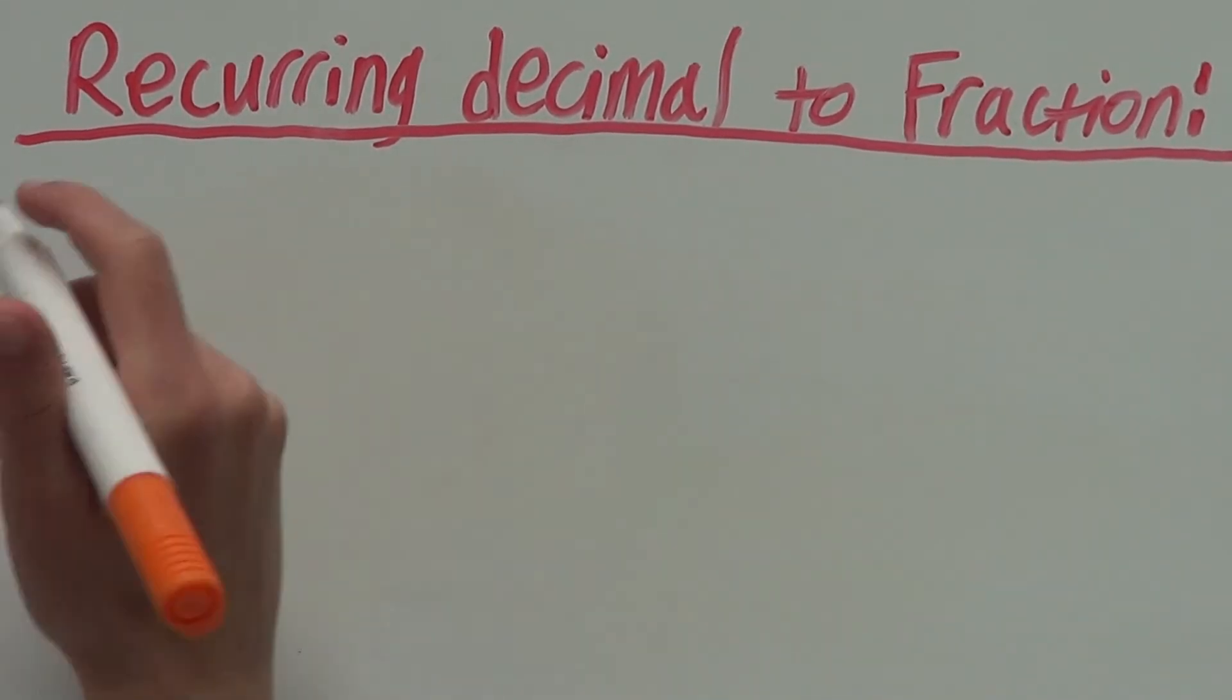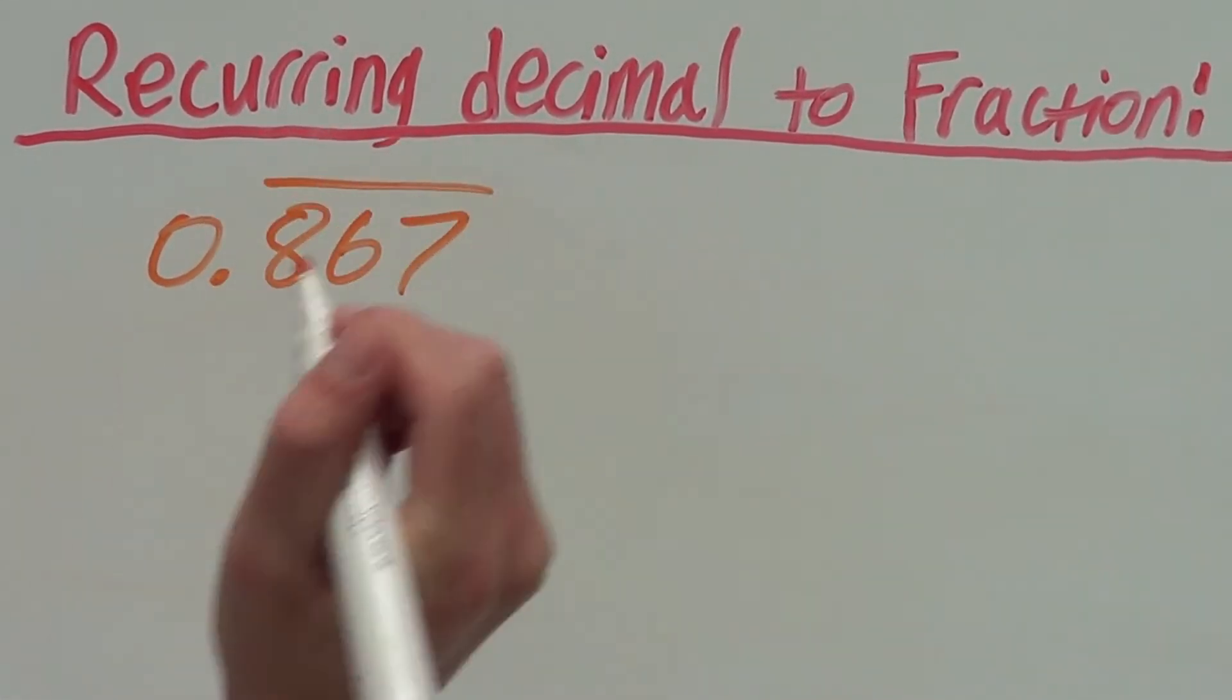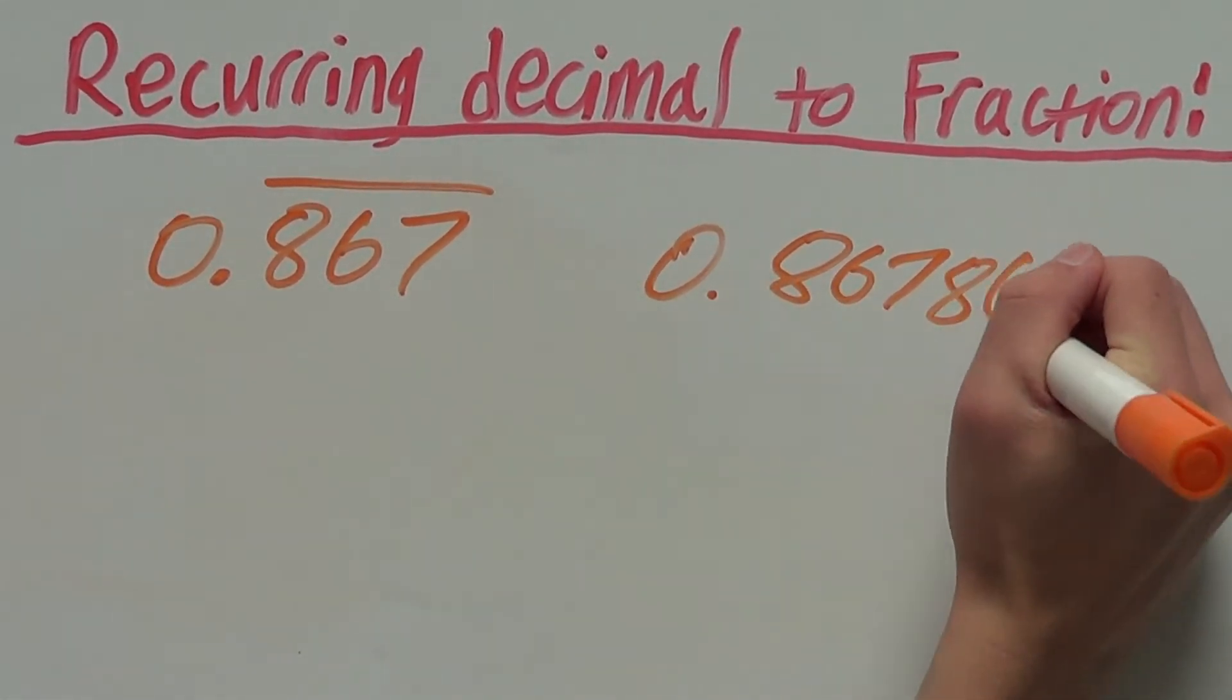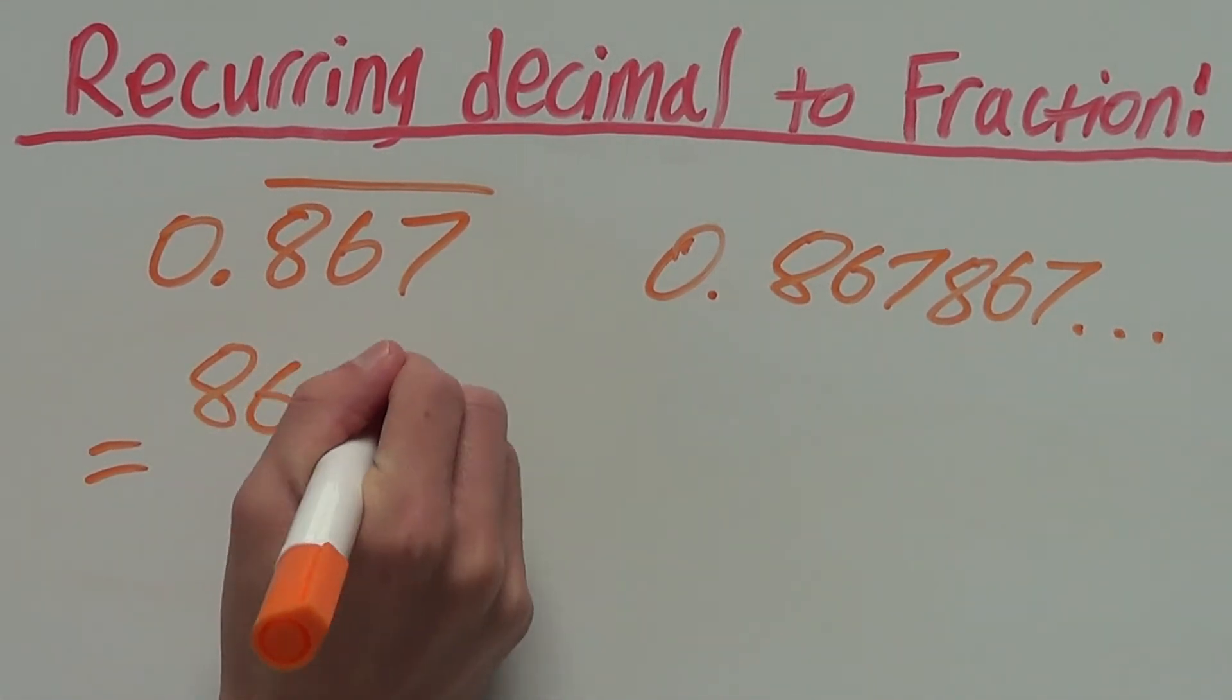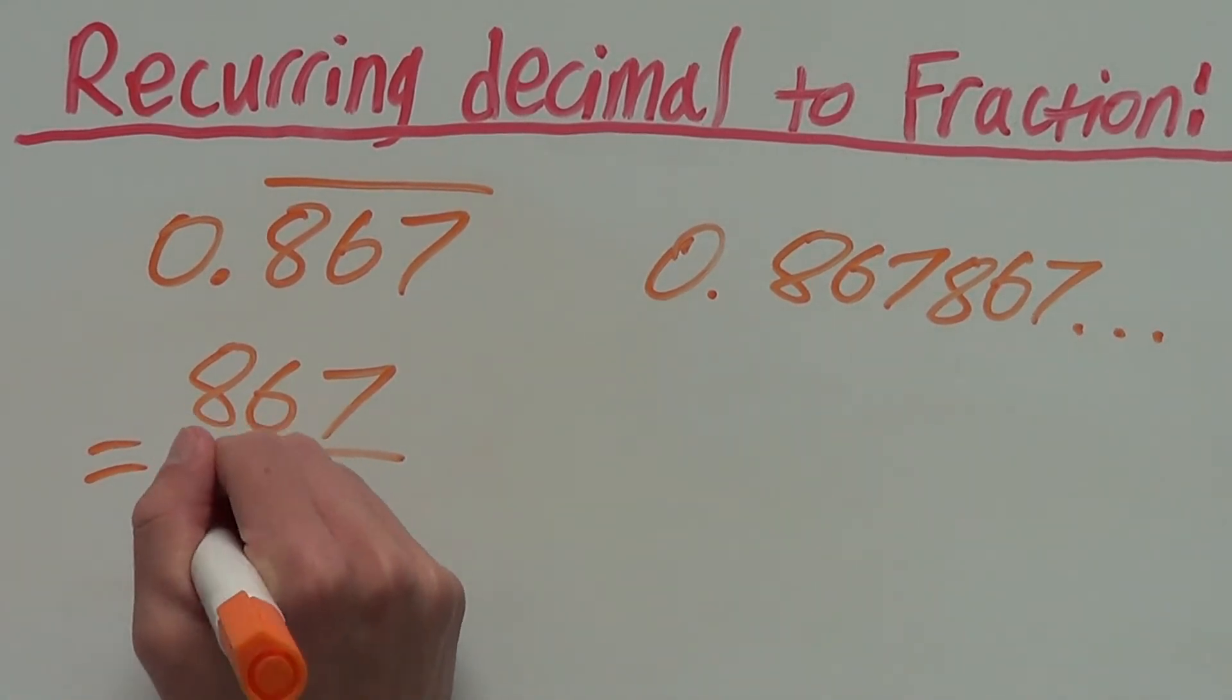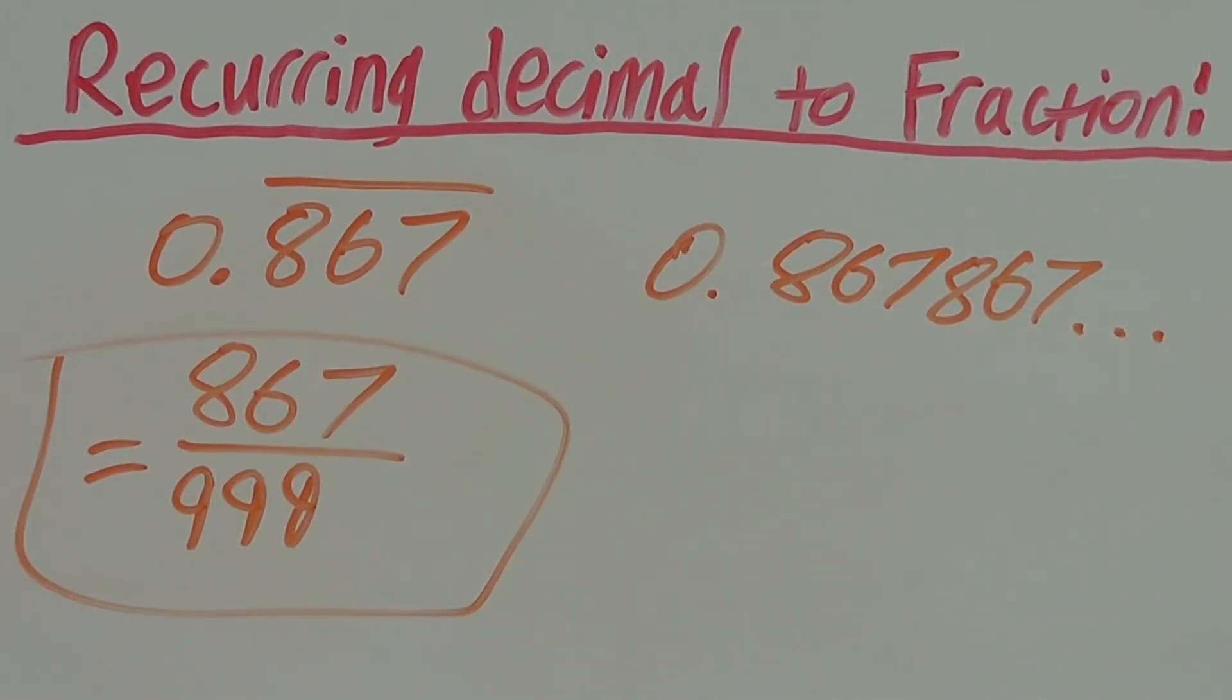So for this last example, let's say we have 0.867 recurring, which is of course 0.867, 867 going on forever. Our recurring numbers go on the numerator, which is 867. Our denominator is always 9's and since there are three numbers on our numerator, our denominator will be 999. So, 0.867 recurring as a fraction is 867 over 999.